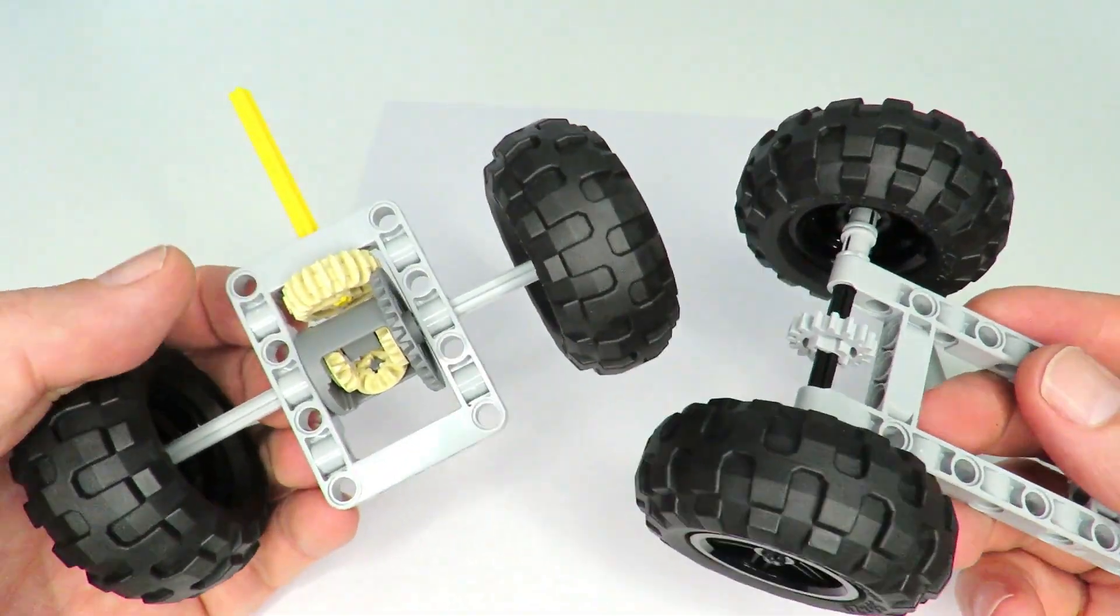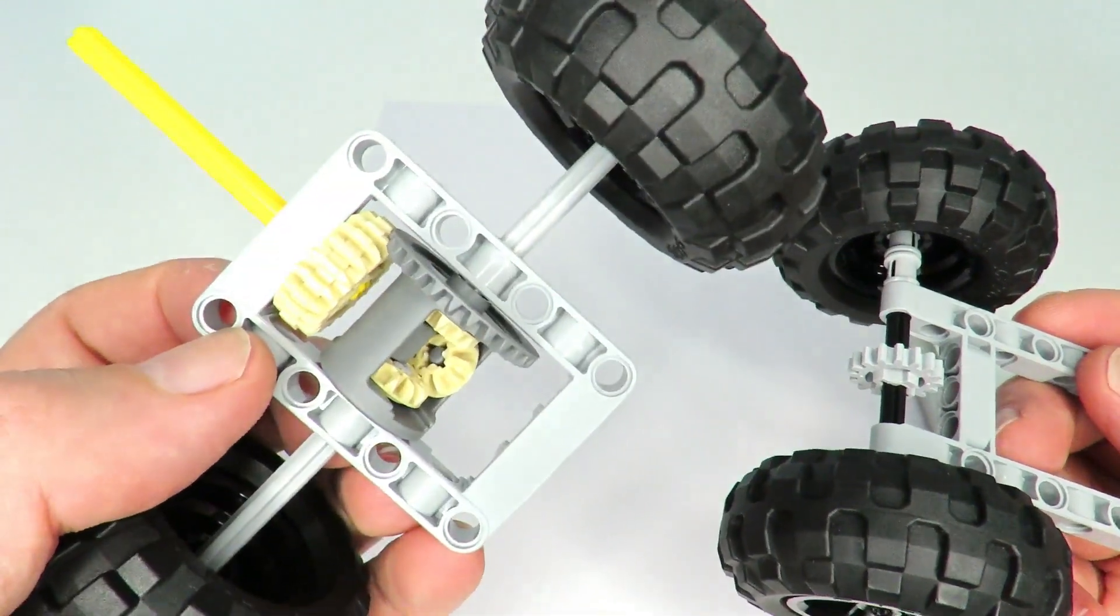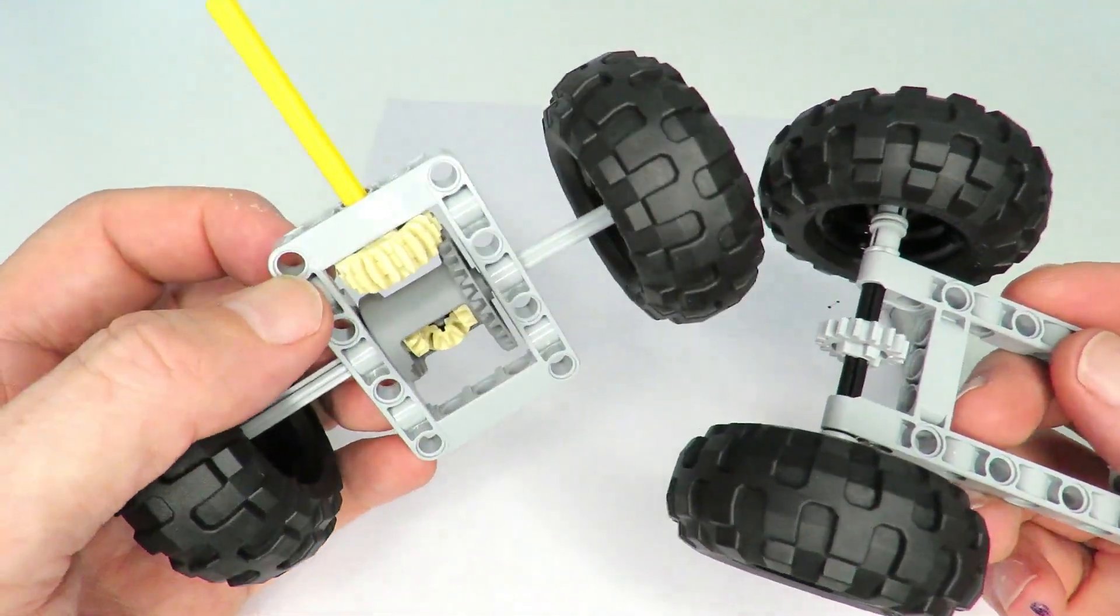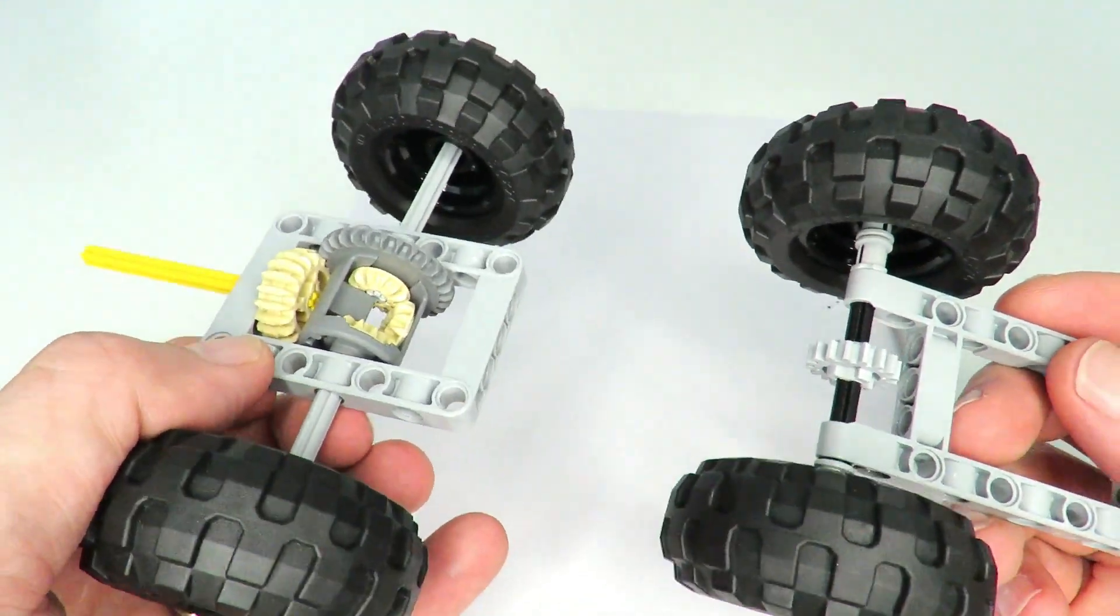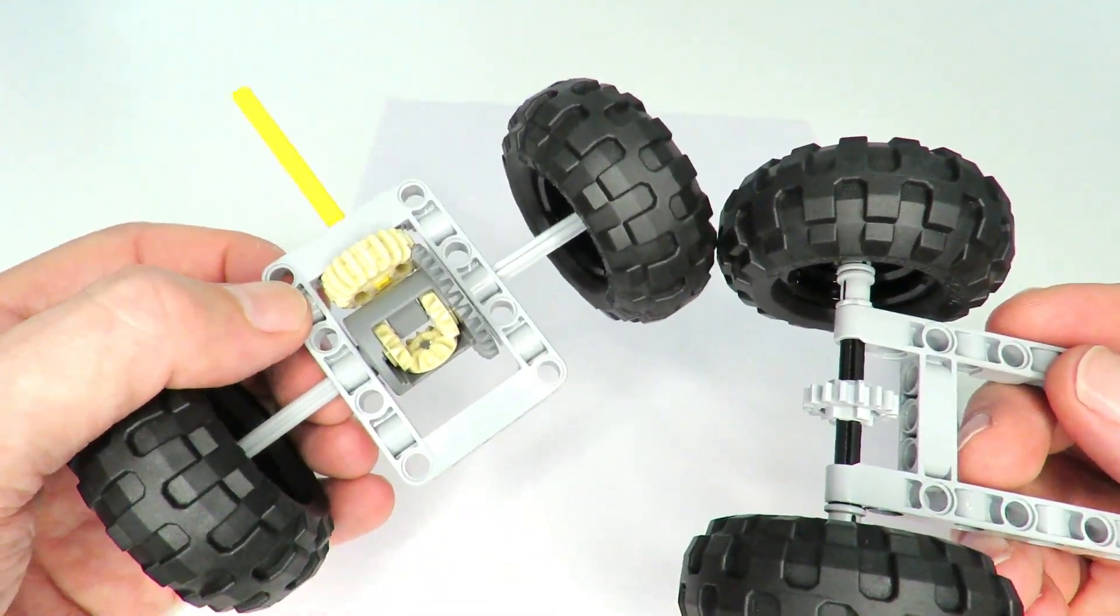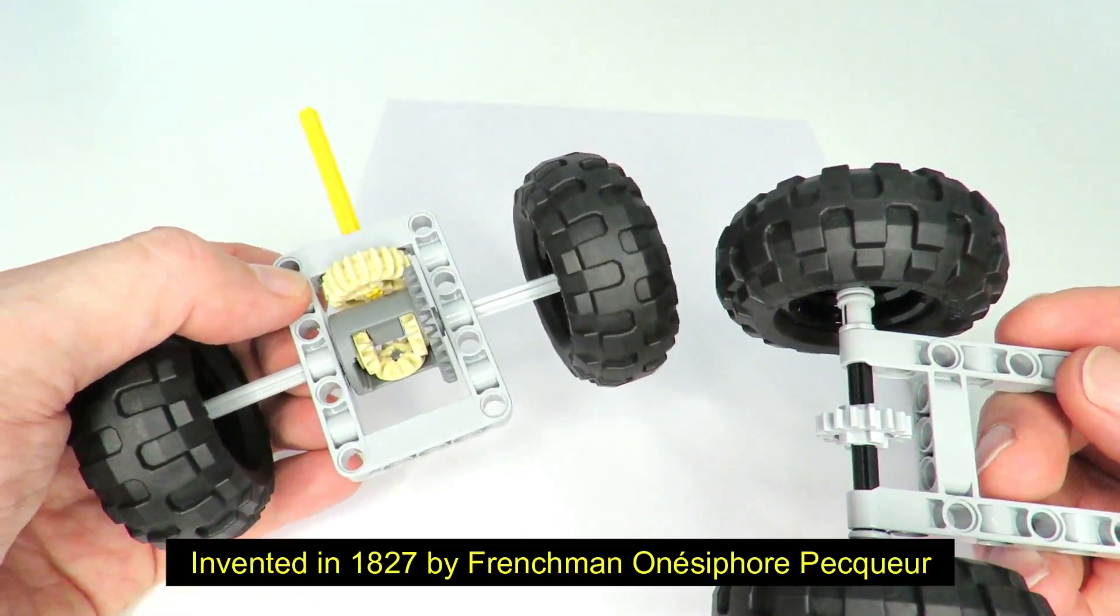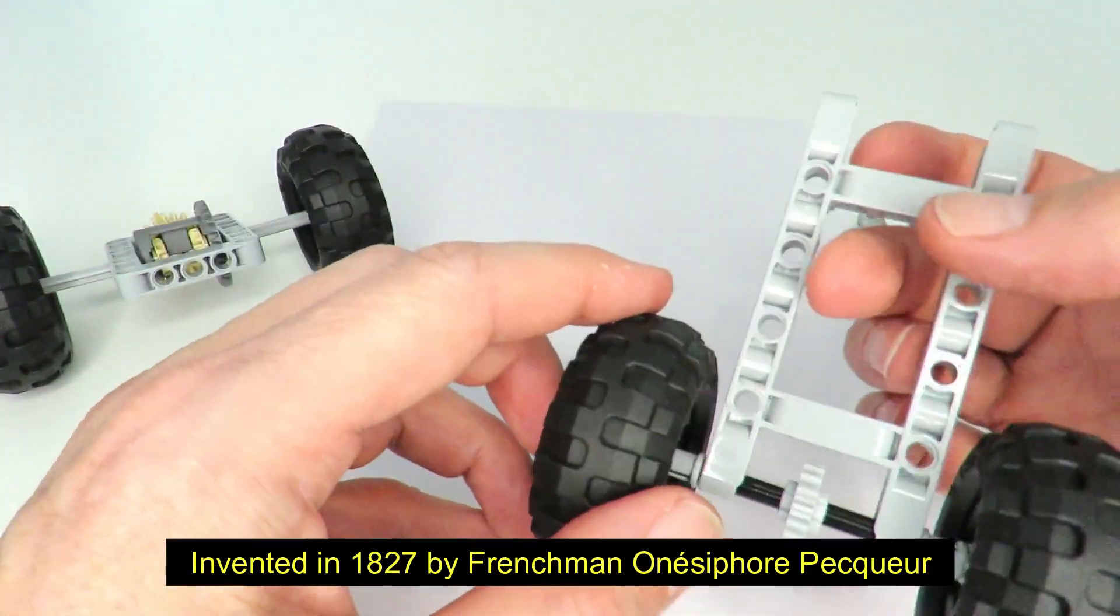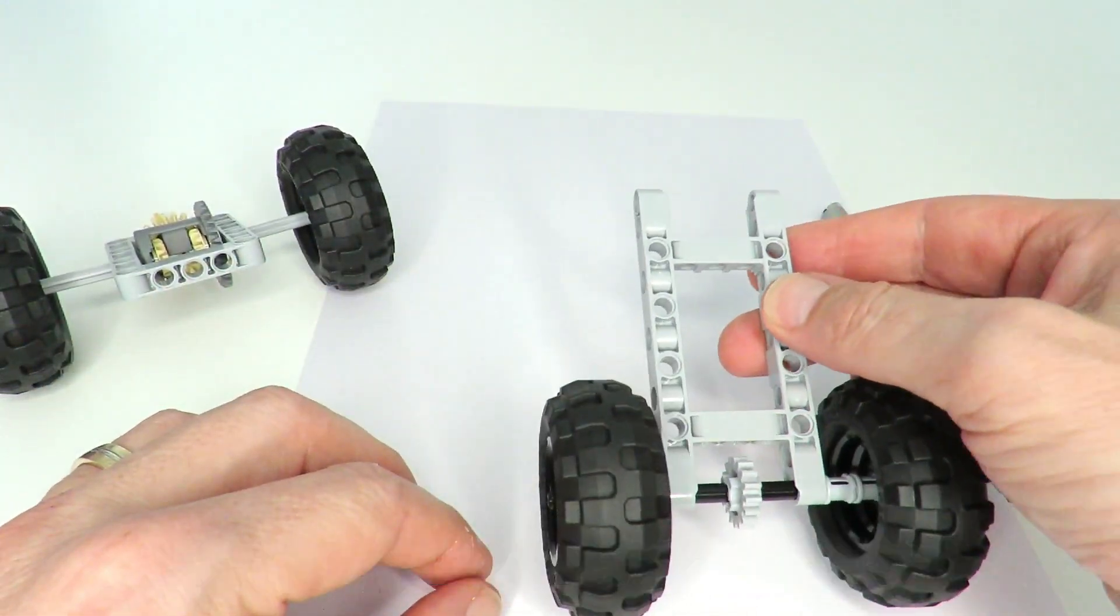Hi everybody, today I'm going to be talking about the amazing differential gearing mechanism. This mechanism was originally invented in 1827 by a French engineer, and the problem he was trying to solve was that of a steam vehicle driving around the corner.